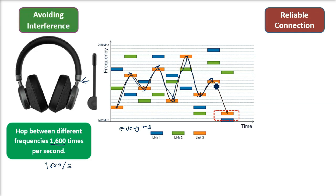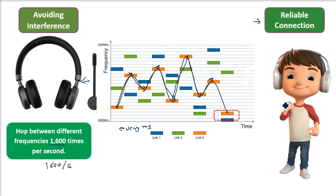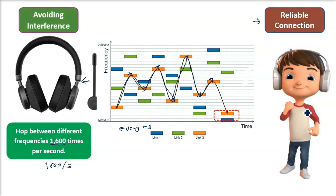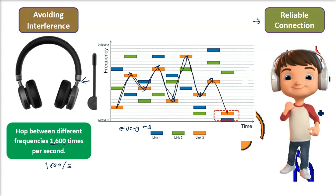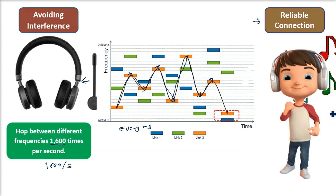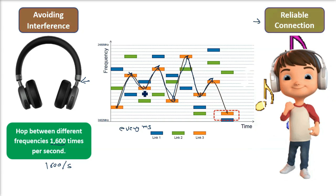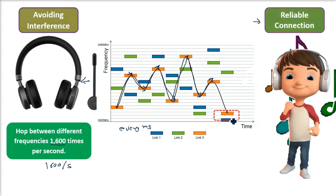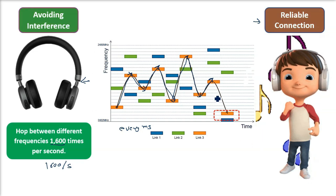Frequency hopping reliable connection सुनिश्चित करती है — यानि कि यह सुनिश्चित करती है कि Bluetooth connection स्थाई, stable, और मजबूत हो उन environments में जहाँ interference की संभावना ज़्यादा हो। आपका music या जो भी आप सुन रहे हैं, वो बिना किसी बाधा के सुन सकते हैं, क्योंकि frequencies हर बार change हो रही हैं। जब एक frequency block हो जाती है, तो बाकी frequencies आपके काम में आती हैं।